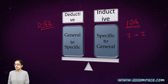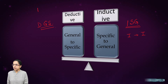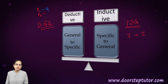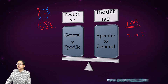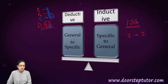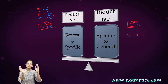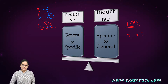In a deductive approach, you have premise 1 and premise 2. One of these premises is a general premise, the other is a specific premise, and your conclusion is a specific conclusion. Therefore, we say we are moving from general to specific, narrowing down the idea of research into a much simpler, easier format.